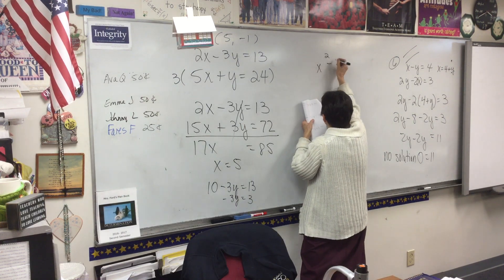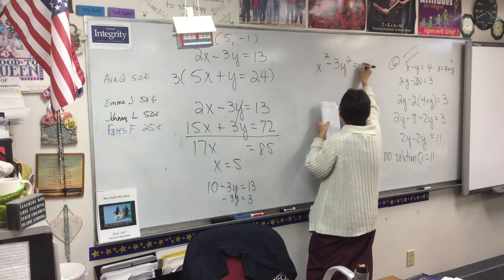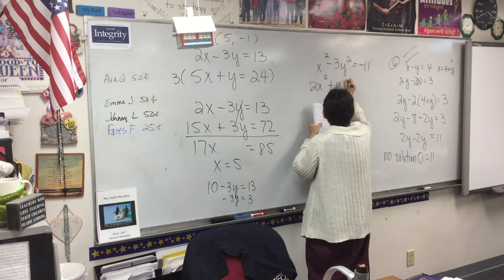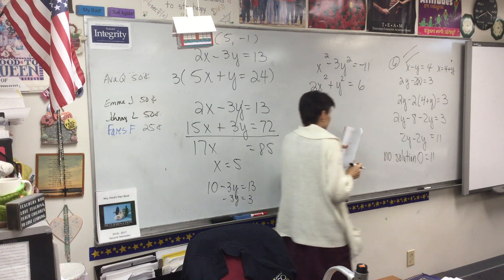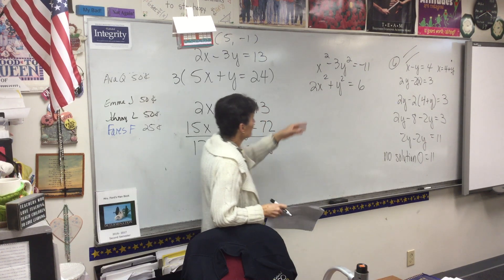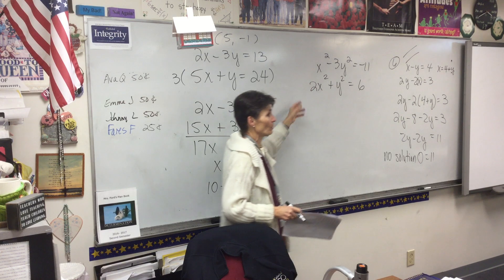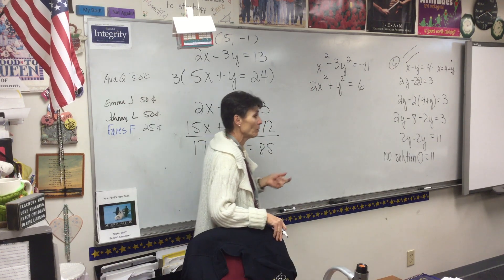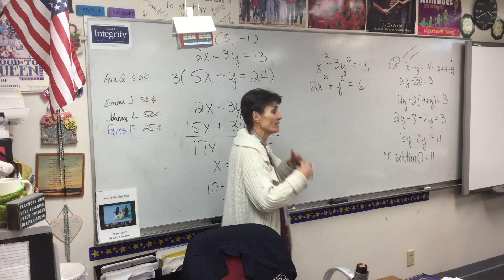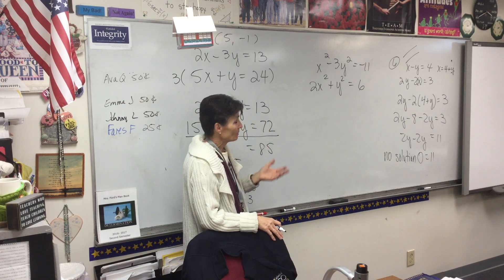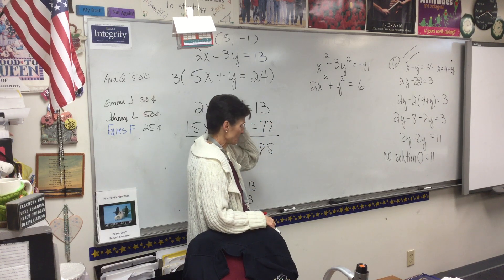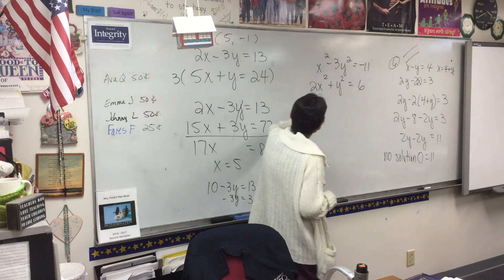Number 4, x squared minus 3y squared equals negative 11, and 2x squared plus y squared equals 6. Now, all kinds of wild things can happen here because you're intersecting a hyperbola with an ellipse. So they cannot intersect. They can intersect in 1 point, 2 points, 3 points, or 4 points. So we don't know what's going to happen. We're just going to have to see. Can we eliminate? Absolutely. What do you want to do?